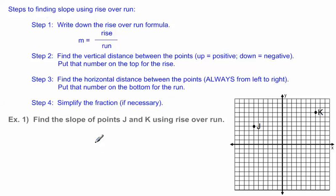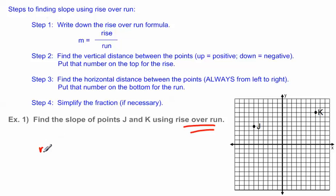Let's go over a problem. Example one: find the slope of points J and K using rise over run. There are four steps that will help you solve the slope between these two points. Step one says write down the rise over run formula, so M equals rise over run.